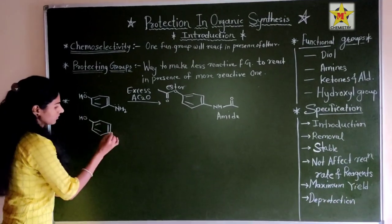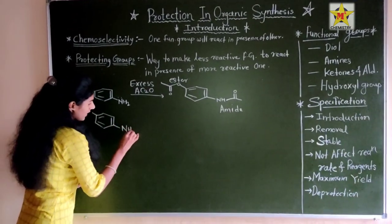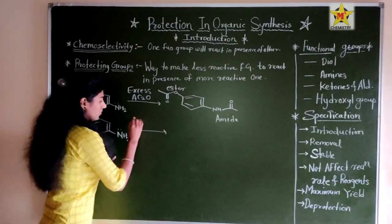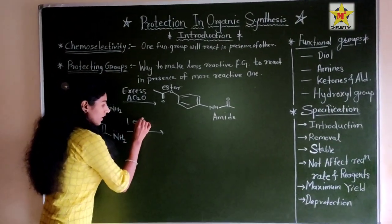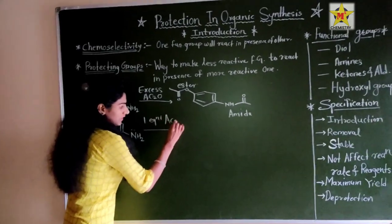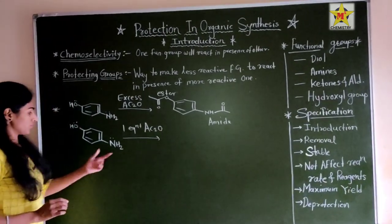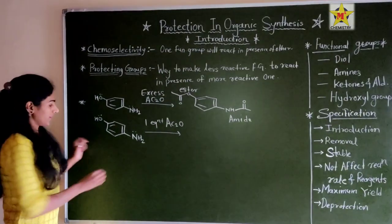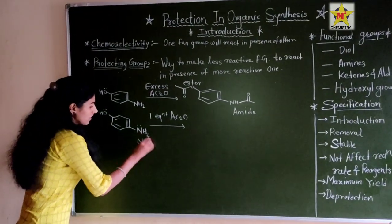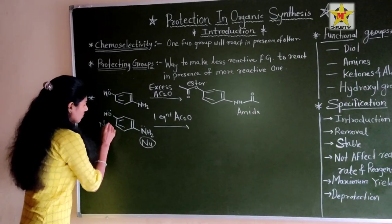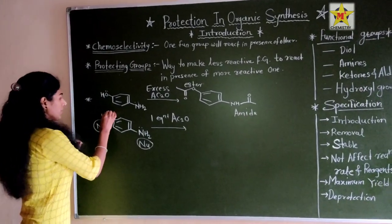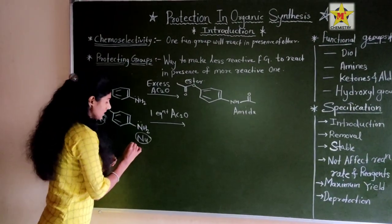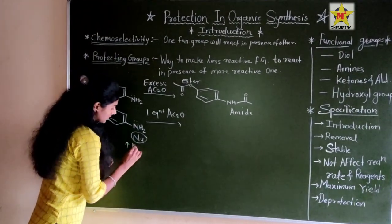In the next example, we take the same compound with NH₂ and OH groups, but now we add only one equivalent of Ac₂O. Both NH₂ and OH are nucleophiles. However, OH is more electronegative than NH₂, and NH₂ has higher nucleophilicity.